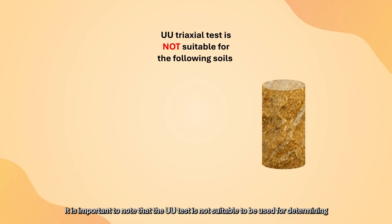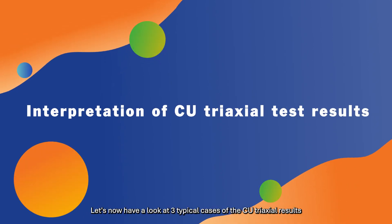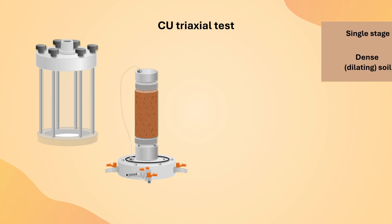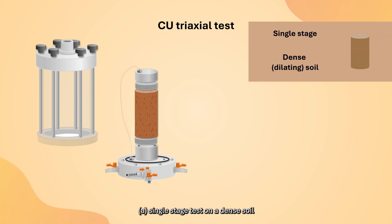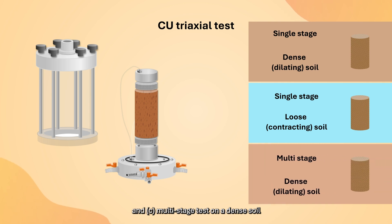It is important to note that the UU test is not suitable to be used for determining the shear strength of saprolitic, residual, and colluvial soils. Let's now have a look at three typical cases of the CU triaxial results: single-stage test on a dense soil, single-stage test on a loose soil, and multi-stage test on a dense soil.